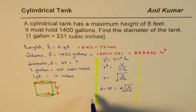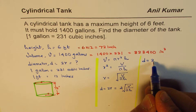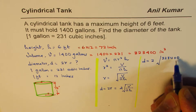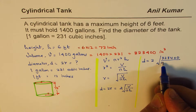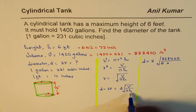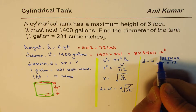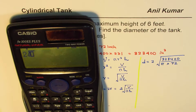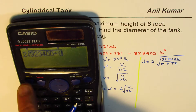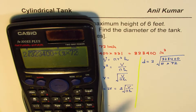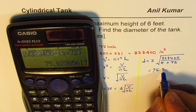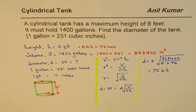Now we substitute our values: diameter equals 2 times the square root of 323,400 divided by π times 72. Calculating this gives us 75.62 inches. This answer is in inches.